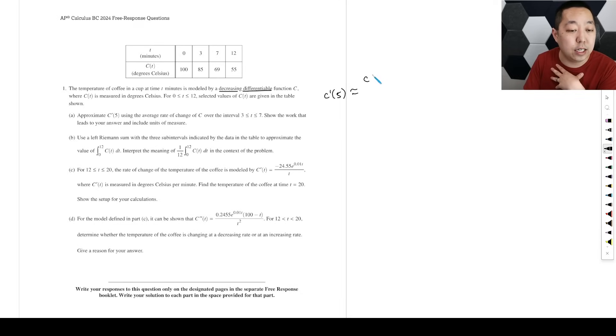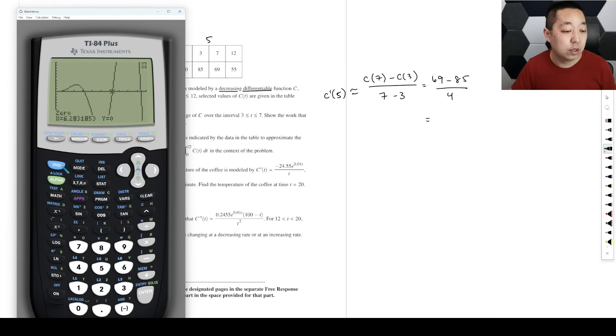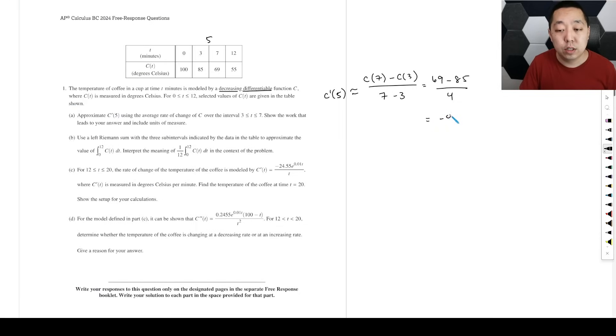We're going to do C of—what values are near 5? 5 is in between here, so it's approximately equal to C(7) minus C(3) over 7 minus 3. That's what we mean by average rate of change. That's going to be 69 minus 85 over 4. I'll pull up my calculator just because this is a calculator FRQ. 69 minus 85 divided by 4, and I get negative 4. What are the units? This is degrees Celsius on top and then per minute—degrees Celsius per minute. Make sure we put the units of measure there.